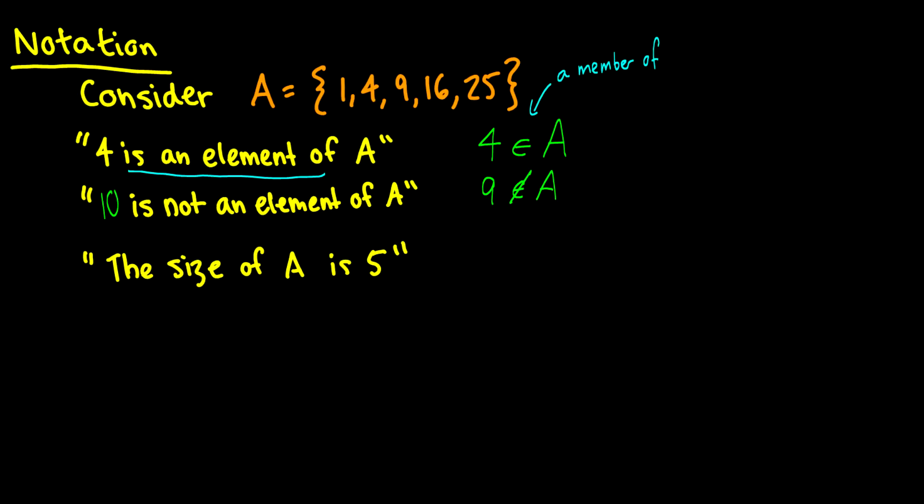So I'm going to change this to a more realistic example, so people don't get confused. So now we have 10 is not an element of A, and this is how we write the notation. We just put a cross through it.